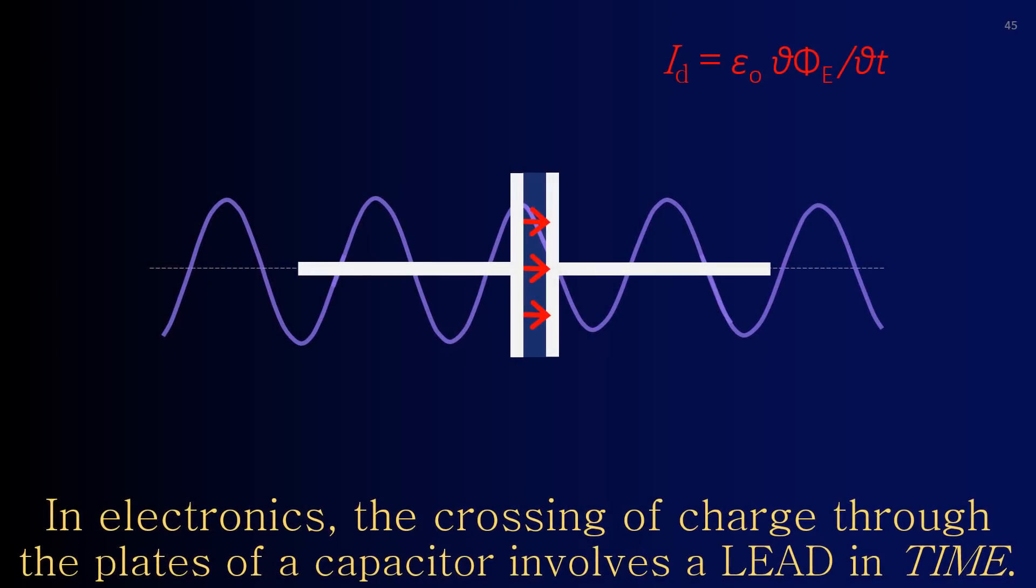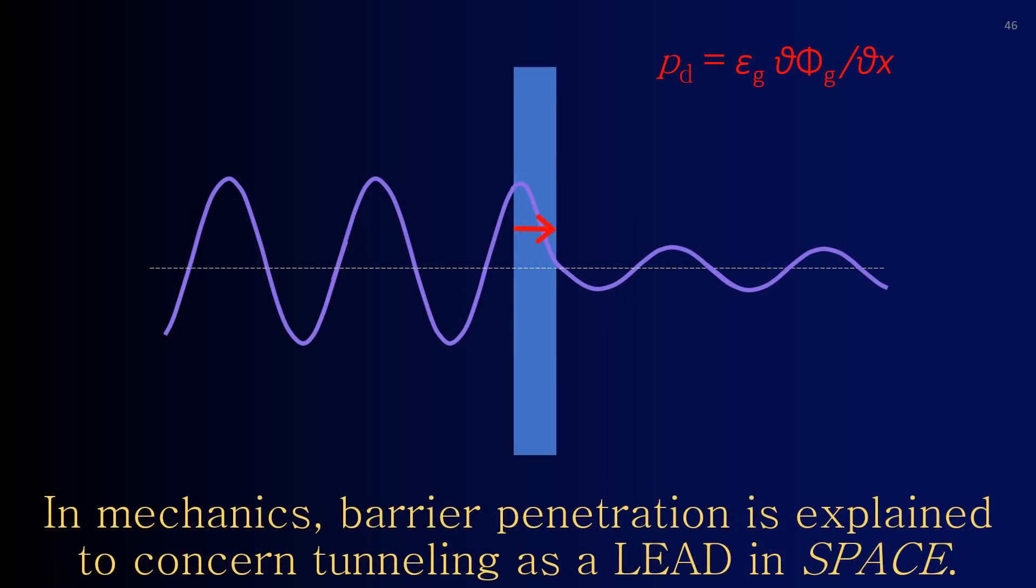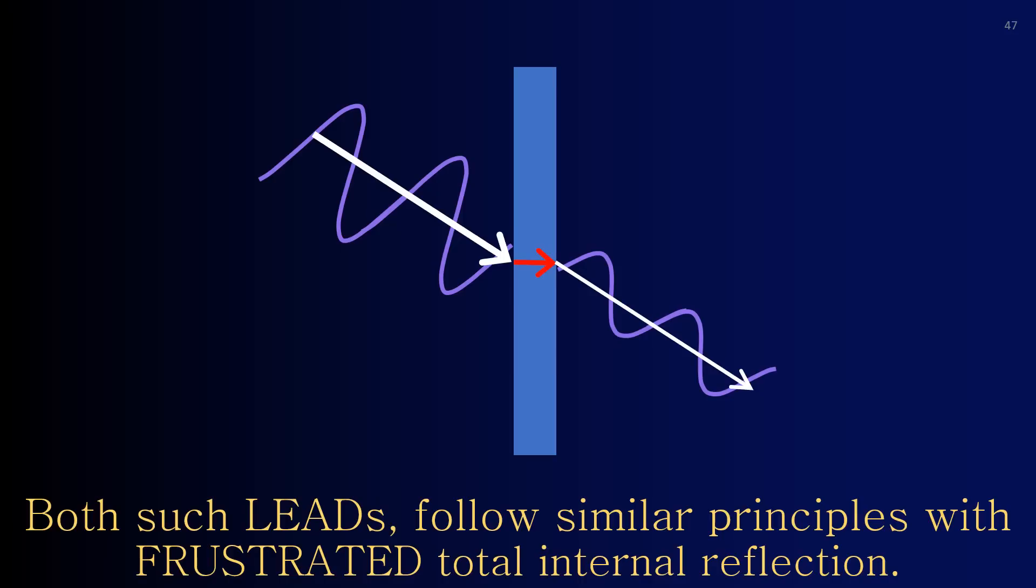In electronics, the crossing of charge through the plates of a capacitor comes along with a lead in time. In mechanics, barrier penetration is explained to concern tunneling, having the form of a lead in space. Both such leads follow similar principles with frustrated total internal reflection.